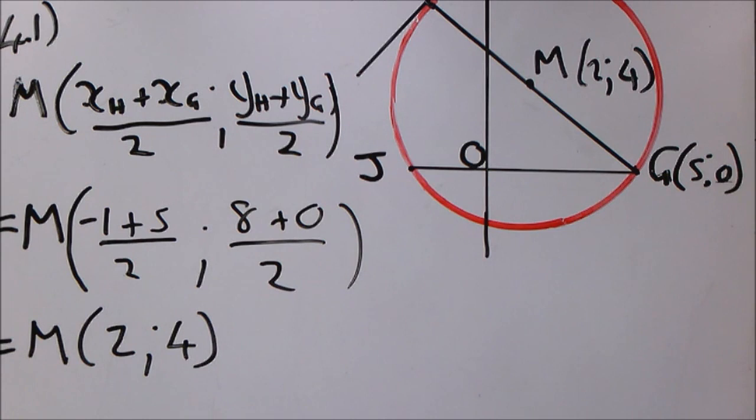So 4.2 asks us to calculate the equation of the circle in the form, and then they give us the form, the center radius format. So we have the coordinates of the center (2,4). So the only thing we need to do is calculate the radius so that we can write down that equation. There's other ways of doing this but this is by far the easiest.